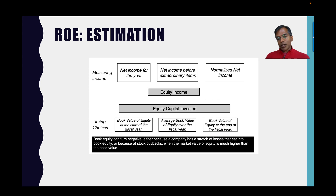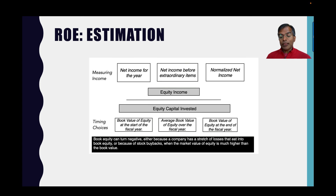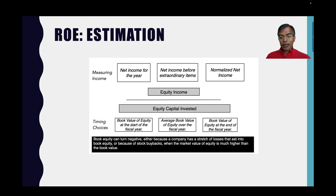For individual companies, book equity can turn negative and nothing can be done about it — for those companies the return on equity is reported as not meaningful. But for industry averages, I aggregate the net income of all companies in the grouping and the book equities for all companies, including those with negative book equity, to produce an aggregated return on equity for the sector. I hope you found the session useful, and thank you very much for listening.